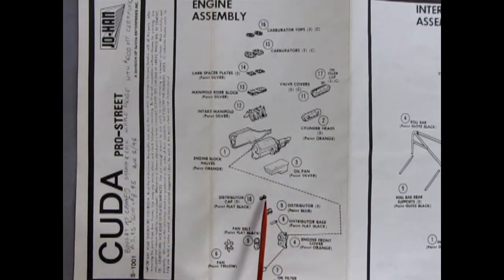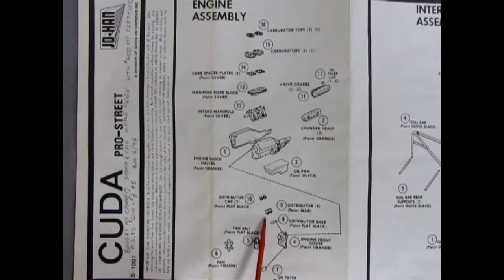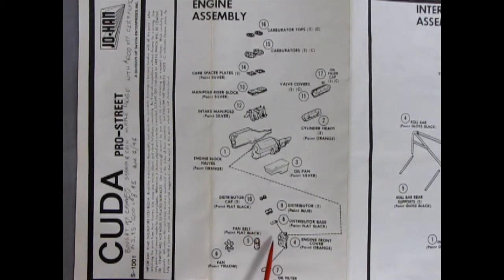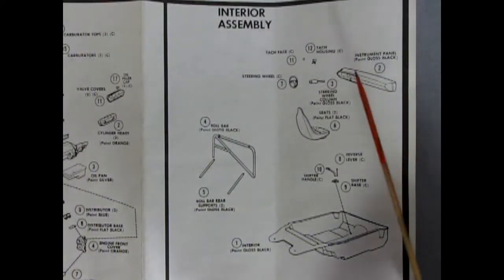There we've got the dual distributors with the housings for them. The distributor base. So you've got caps, distributor, and the base. Three parts. Glues on the front engine cover with the oil filter, the fan belt, and the fan. Far out.